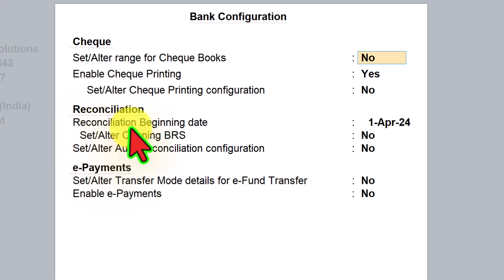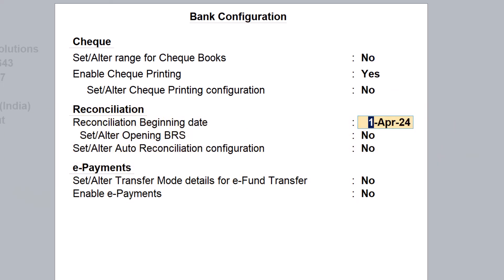The first option is reconciliation beginning date. Here you can enter the beginning date for reconciliation. For example, if you have not reconciled your bank account for previous years and now you want to start reconciliation from the current year, you can type 1st of April 2025, which is for the financial year 2025-26.